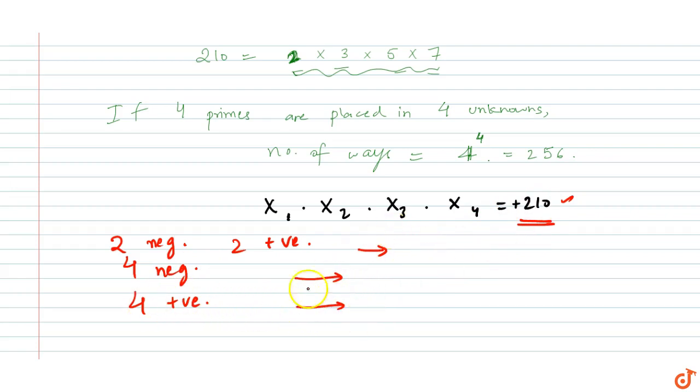So how many cases are there? Two negatives out of four, so 4C2, you select two out of four, and then the rest of the two are positive, so 2C2. Now four negatives, all four are negatives, so 4C4. And four positives means again 4C4.